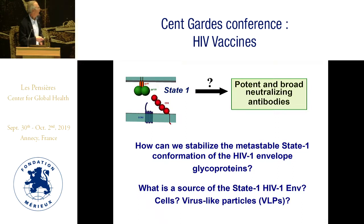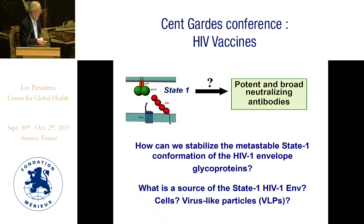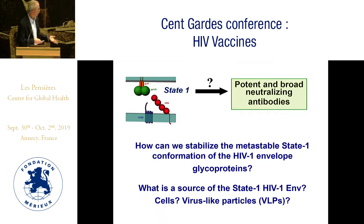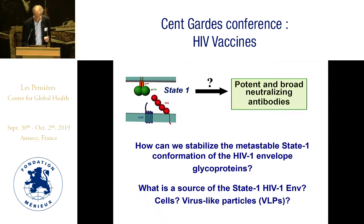To test that hypothesis, we have to get envelope immunogens that are enriched in state 1. Today I'm going to address two questions we've been making progress towards: first, how can we stabilize this metastable state 1 conformation — this very labile conformation of the envelope glycoproteins — and second, what is the source of state 1 envelope? Can we rely on the cell surface envelope, or do we have to use virus-like particles?